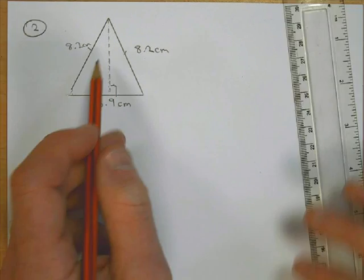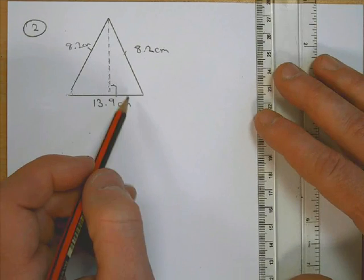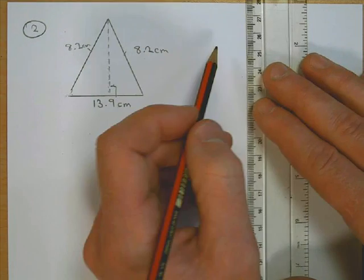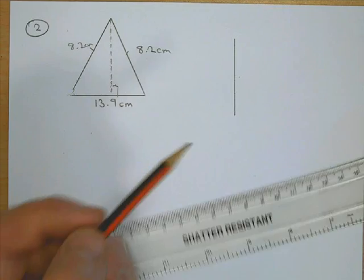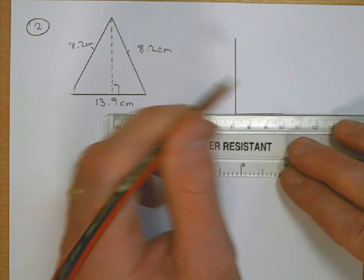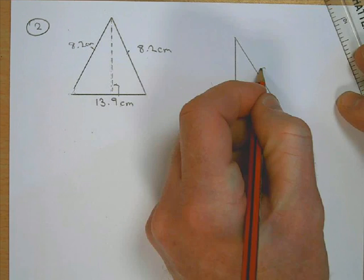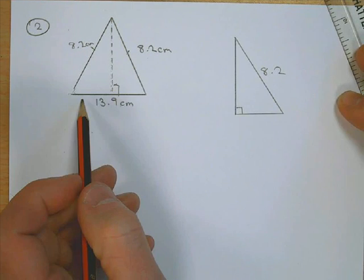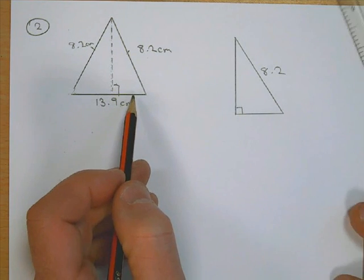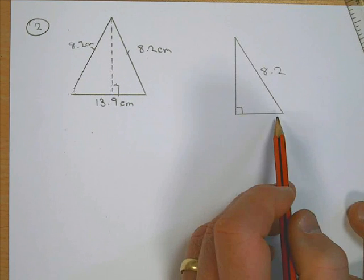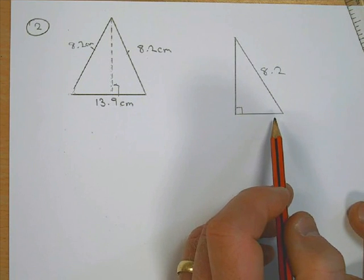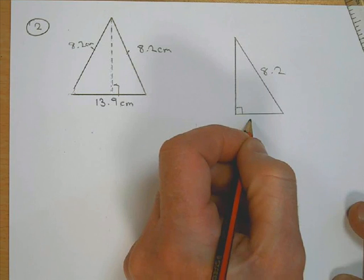So we're going to use the one on the right-hand side here. And if I just draw that triangle out again, we know that this hypotenuse is 8.2. This is 13.9. Half of that will be the length of this one here: 6.95.